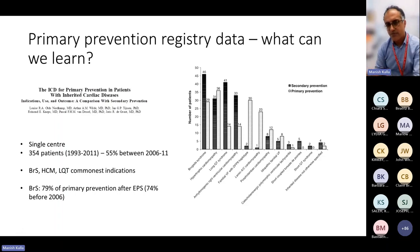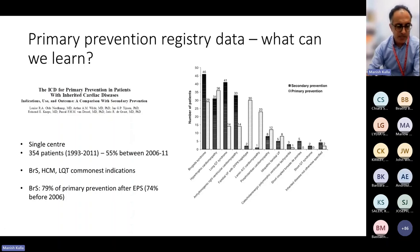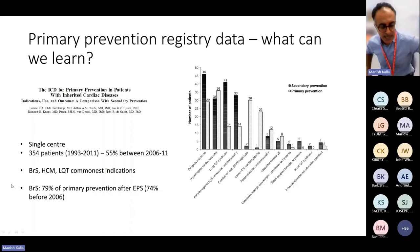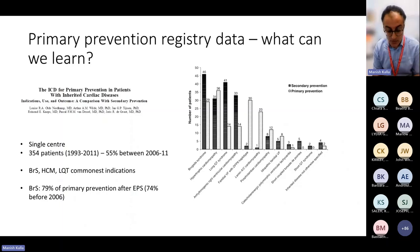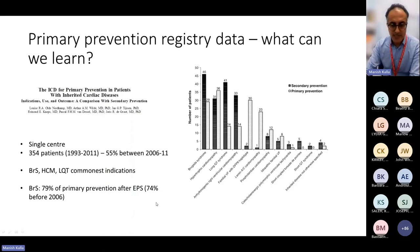Looking at registry data from 2013 from a very experienced group — though implant techniques have since evolved — in a large single-centre cohort, the commonest indications were Brugada syndrome, hypertrophic cardiomyopathy, and long QT. In Brugada syndrome, 79% of implants followed EP study, which remains a controversial area. In research centres during the late 1990s and early 2000s, more electrophysiological testing was performed, reflected in the high primary prevention implant numbers in Brugada syndrome.